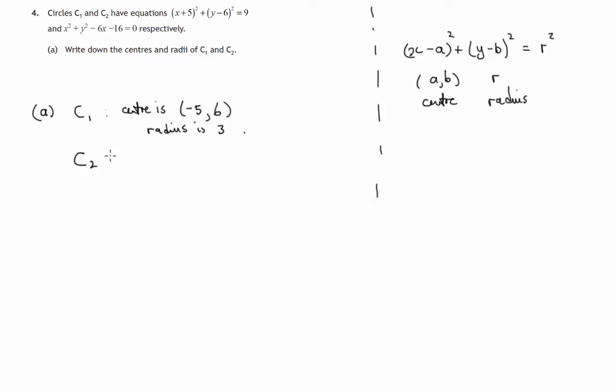Circle two, slightly different. Let's look at x² + y². There's an x term now. There is no y term, so I'll just put 0y - 16 = 0. Now the procedure this time to find the center...